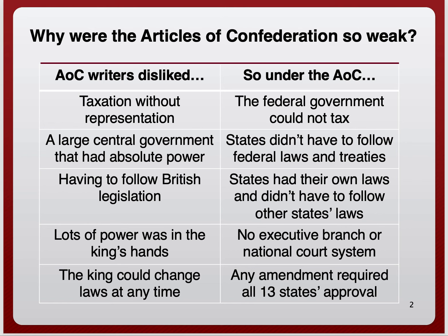The colonists didn't like how King George III had so much power, so under the Articles of Confederation, we didn't have an executive branch — meaning no president or the offices that surround the president. The job of the executive branch is to enforce laws, and we lacked that. We also did not have a national court system, largely because court proceedings during the revolutionary years weren't fair to the colonists, so they intentionally left that out.